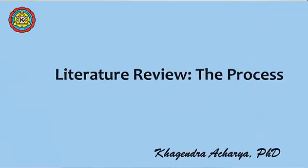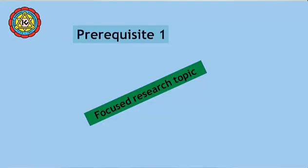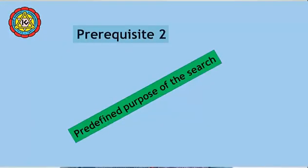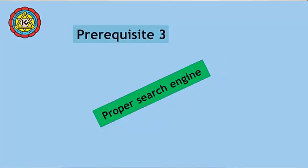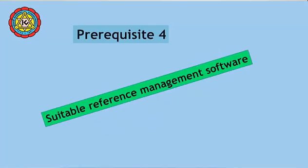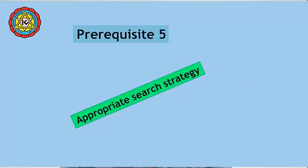This second session focuses on the process part of Literature Review. In the process part, I have included five prerequisites: Focused Research Topic, Pre-defined Purpose of the Source, Proper Source Engine, Suitable Reference Management Software, and Appropriate Search Strategy.